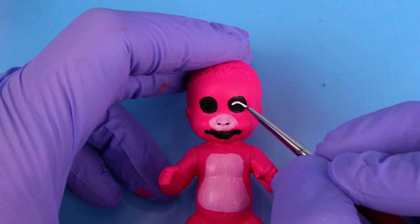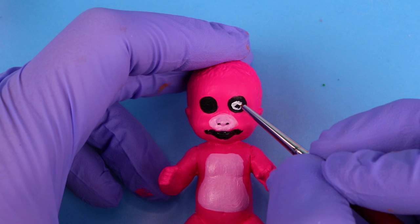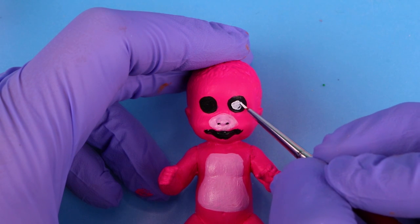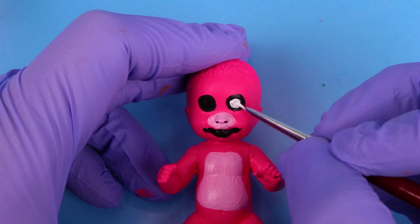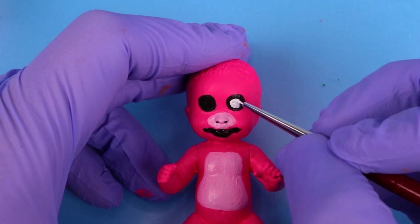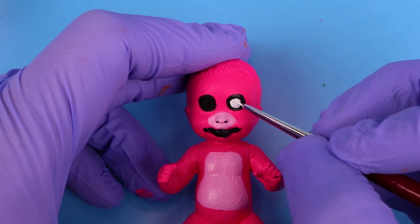I painted in the whites of his eyes. His eyes are very round. Most of the Five Nights at Freddy's characters have these really big round eyes. It kind of makes them easy to do because they're just like big circles.